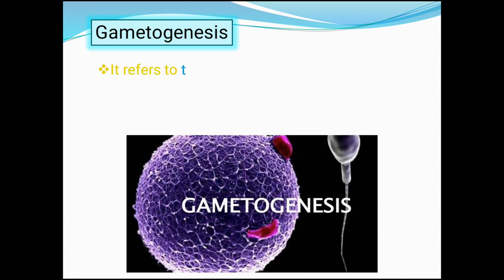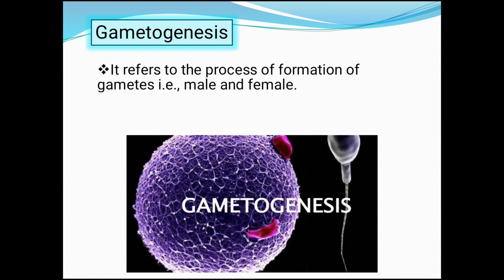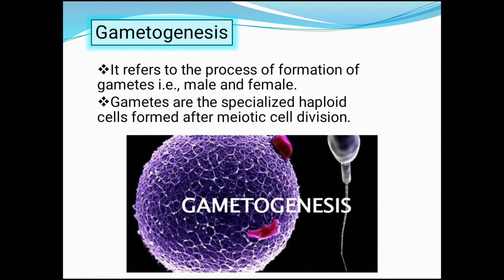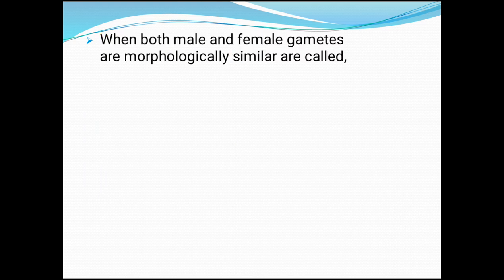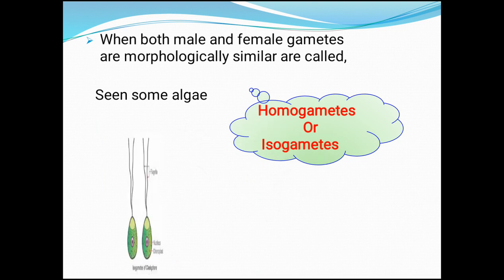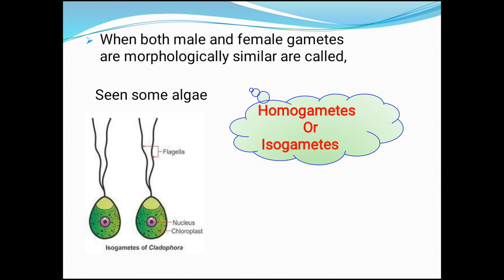Let us study about gametogenesis. Gametogenesis refers to the process of formation of gametes, that includes male and female gametes. Gametes are the specialized haploid cells formed after meiotic cell division. When both male and female gametes are morphologically similar, such gametes are called homogametes or isogametes, and these can be seen in some algae — for example, isogametes of Cladophora, where both male and female gametes appear morphologically similar.